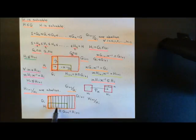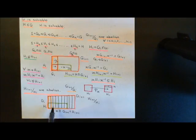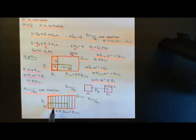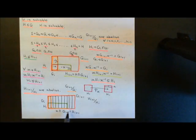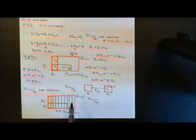The composition law will be identical because the way it works is you just take two representatives and compose them together according to the initial group composition law and then take the coset that contains the answer. You could have used representatives in these parts of the cosets to work out which coset was going to be your answer. So indeed this will be a subgroup of this, and the picture captures that.